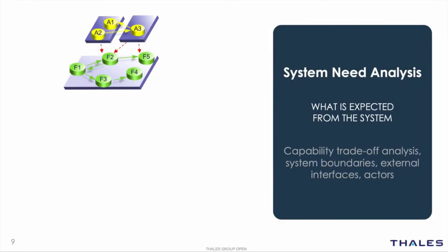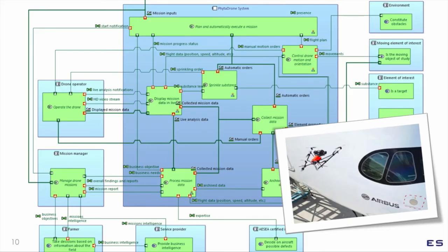The second Arcadia perspective dedicated to the need capture is called the system need analysis. Here, we focus on what is expected from the system. We formalise the result of capability trade-off analysis and clearly identify the system boundaries and actors. The functional analysis focuses on what is expected from our system. A function allows the drone to control its orientation and motion, whether via automated piloting or manual control.